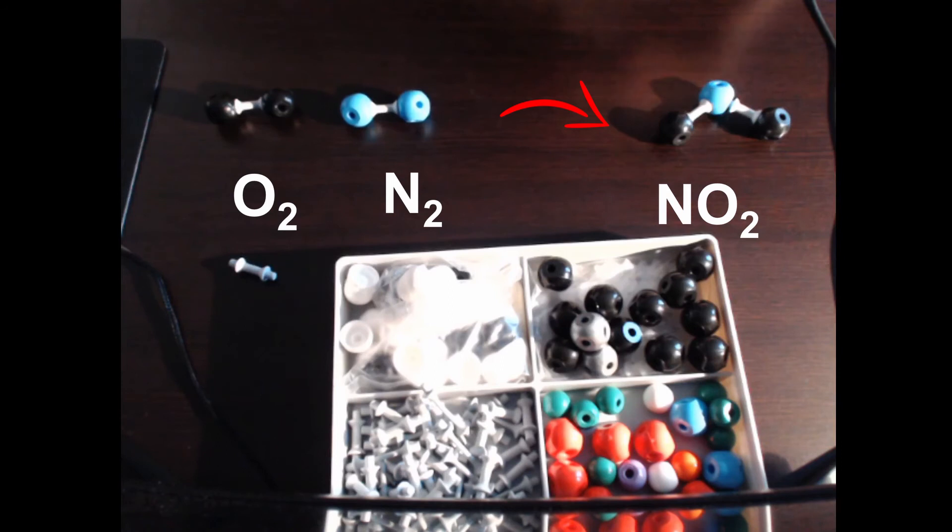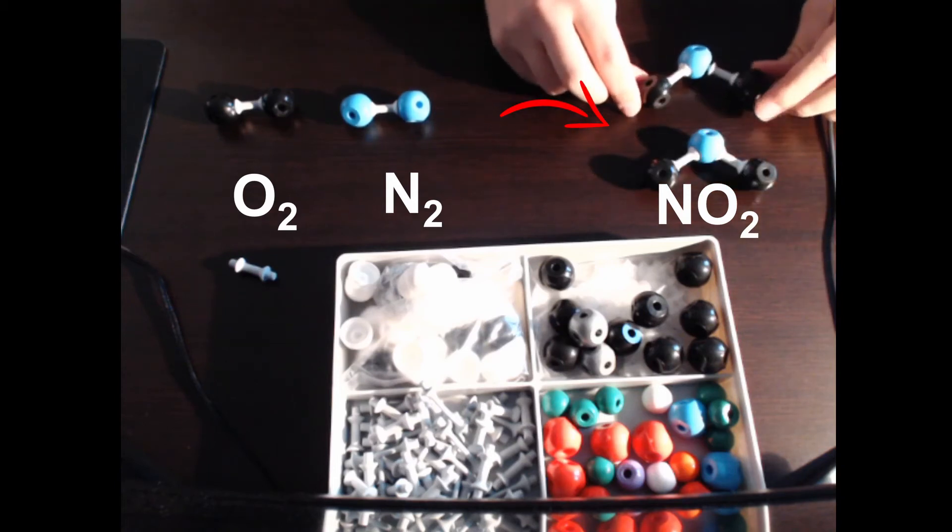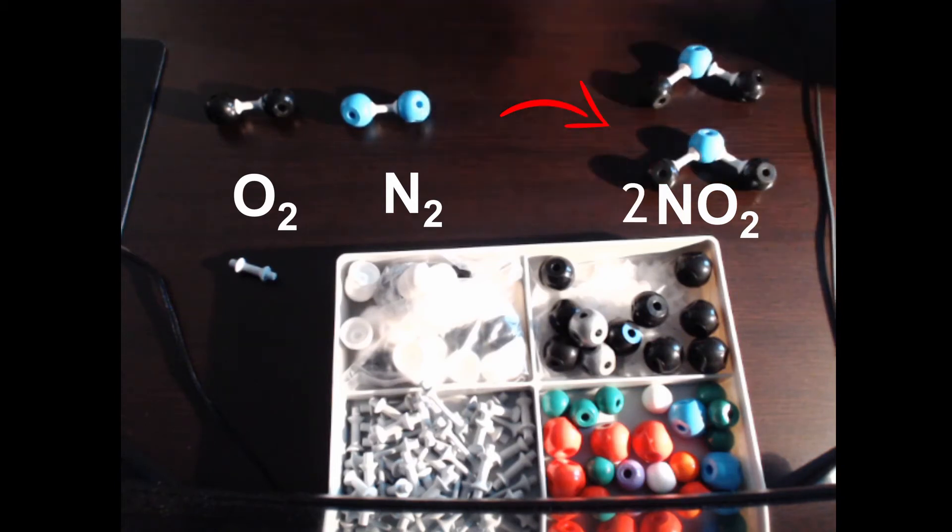And so what we would see then is that in fact it would react with one of the other oxygens. And then our products would end up looking like this, where we'd have two NO2s produced.